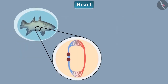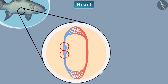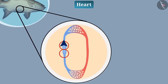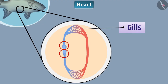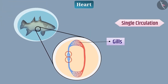Fish have a two-chambered heart. For oxygenation, blood is carried from the heart to the gills, and from the gills, oxygenated blood is transported to all body parts. Thus, in every round of circulation in fish, blood enters the heart only once. This is called single circulation.